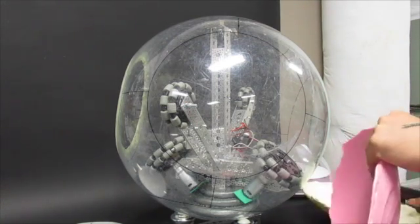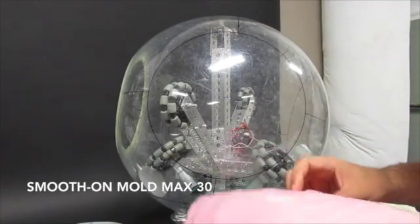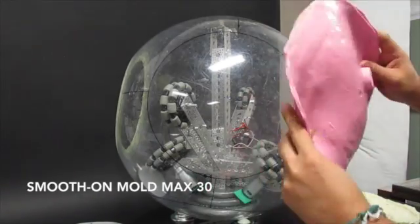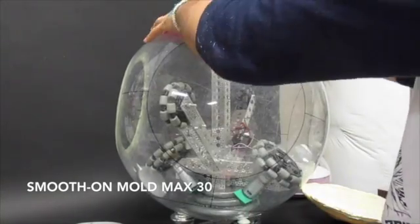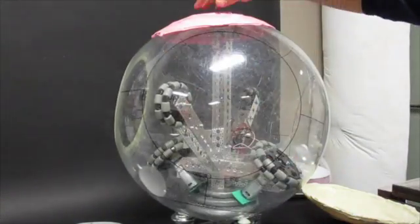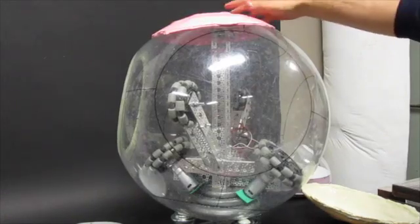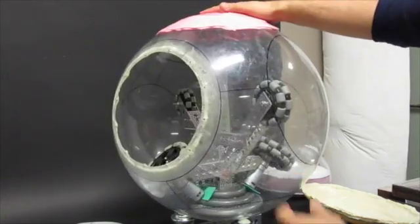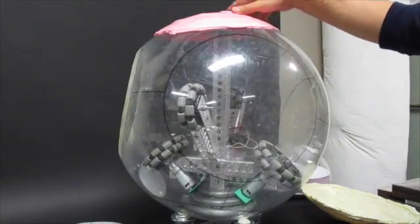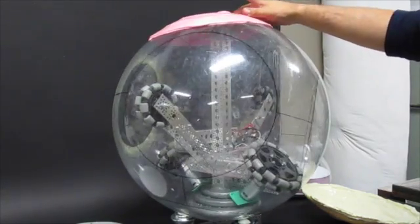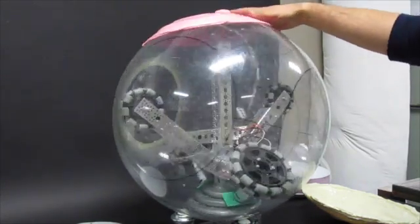I used Smooth-On's Mold Max 30 and I added a silicone thickener so that it wasn't so runny. And basically poured it over the top of it in a wide enough circumference that I could cut it down to fit the opening that I needed.